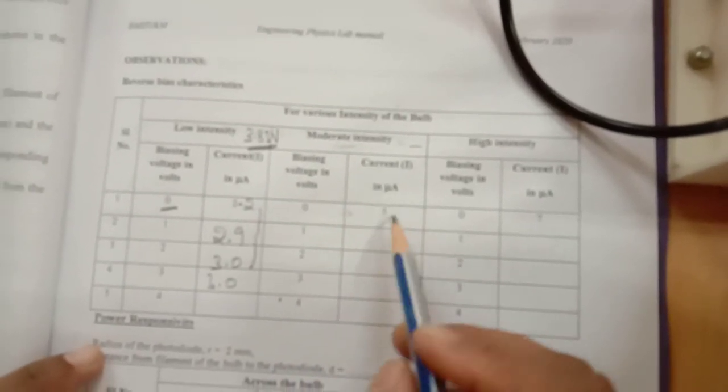Till that, you need to vary the voltage across the bulb and mention that voltage. That is for moderate intensity. Then you have to keep biasing voltage as 0 in order to get 5 microamperes of current. Then you have to vary the biasing voltage in steps of 1, 2, 3, 4.